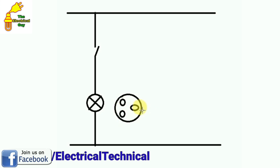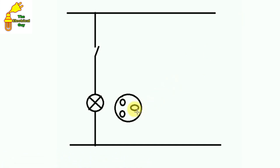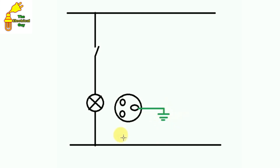First, let us connect with earth. To connect with earth, this thicker pin here — connect this pin directly with earth through a wire. Just make a symbol of earth here and connect directly. So I have connected this with earth.